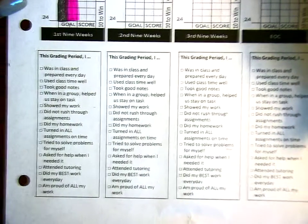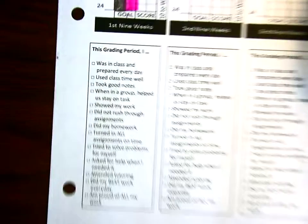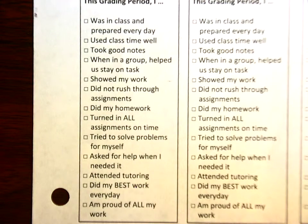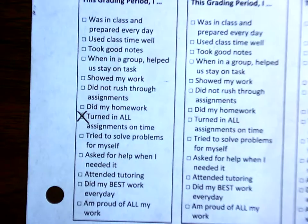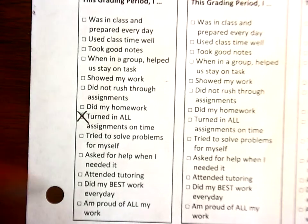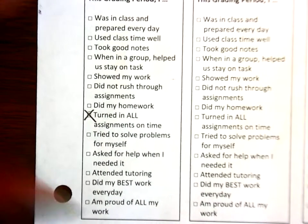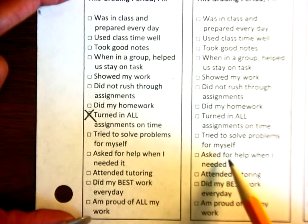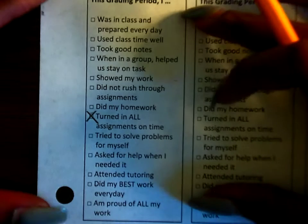Now here at the bottom, you are going to fill out every grading period what you do in class. Take this part seriously. If I see you checking something I know you didn't do — like if you checked 'turned in all assignments on time' and I know you did not — we're going to have a little conference. Be honest about yourself. This is really going to reflect how much effort you're putting in. If we only have one check on this side by this nine weeks, we need to have some more checks. Be honest.